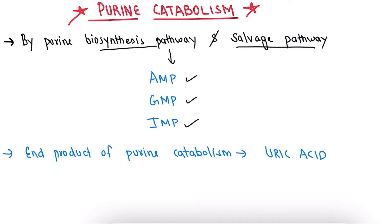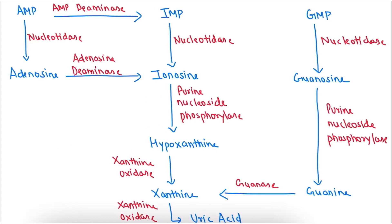The end product of purine catabolism is uric acid. You should remember this — the end product of purine catabolism is uric acid. Now let's study the pathway of purine degradation.